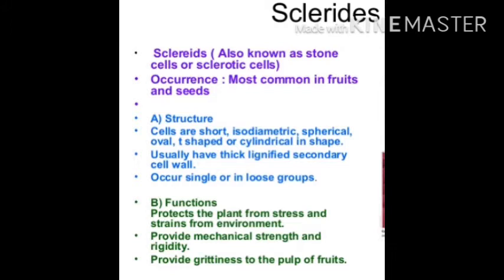Sclereids, also known as stone cells or sclerotic cells. Occurrence: most common in fruit and seeds. Structure: cells are short and isodiametric, spherical, oval, T-shaped or cylindrical in shape. Usually have thick, lignified secondary cell walls. Occur singly or in a loose group. The function of sclereids: protection — protects the plant from stress and strain from the environment. Provides mechanical strength and rigidity. Provides grittiness to the pulp of the fruit.